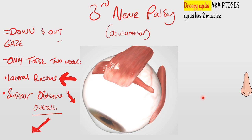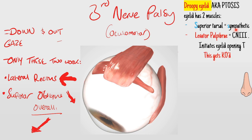You have to know why this happens. The upper eyelid has two muscles that keep it open. One is your superior tarsal - because it has an S in it, that's innervated by the sympathetic nervous system. Your other muscle, important in third nerve palsy, is called the levator palpebrae muscle, and that is innervated by your oculomotor nerve. So if your oculomotor nerve is KO'd, the levator palpebrae muscle will not be working.